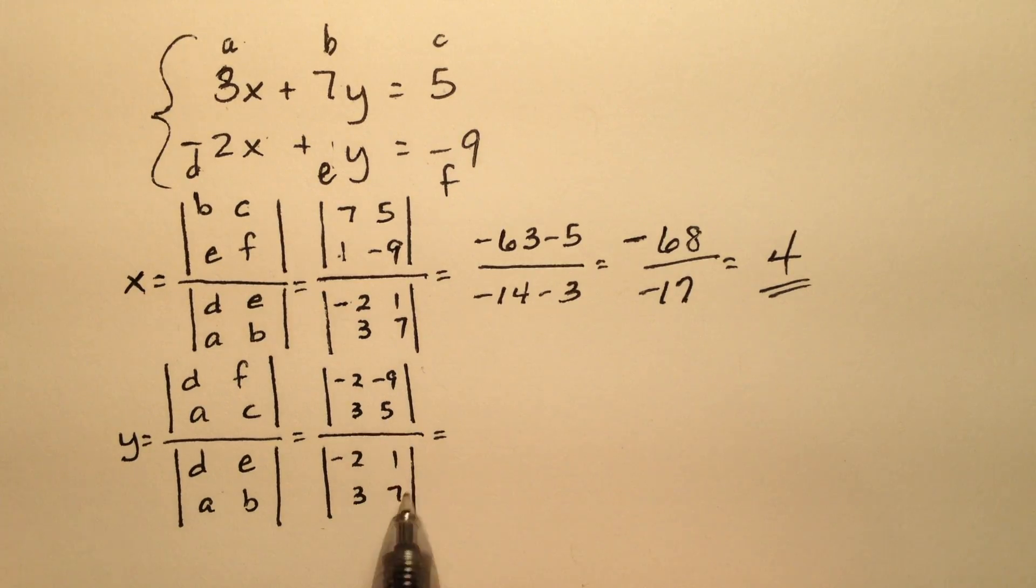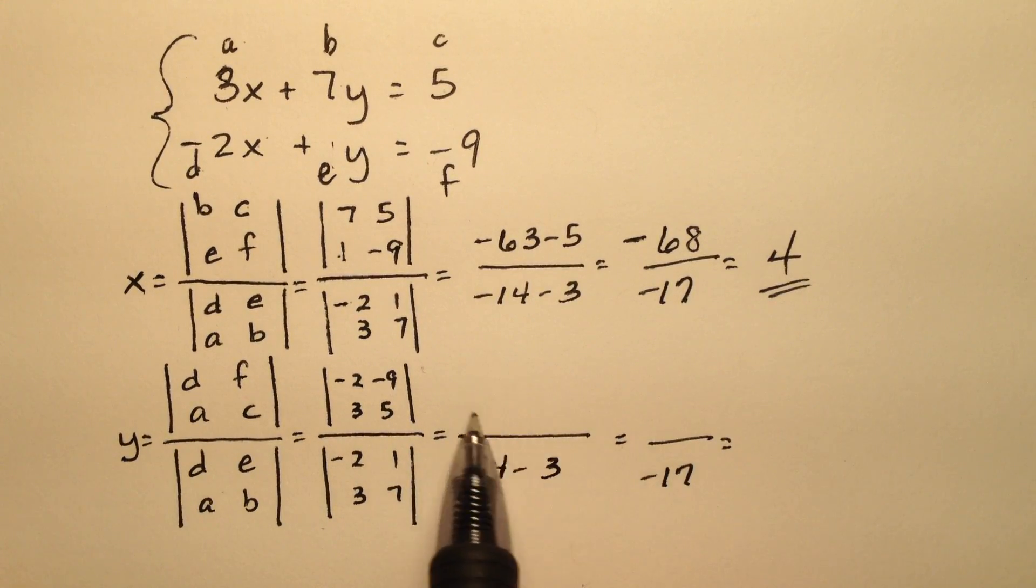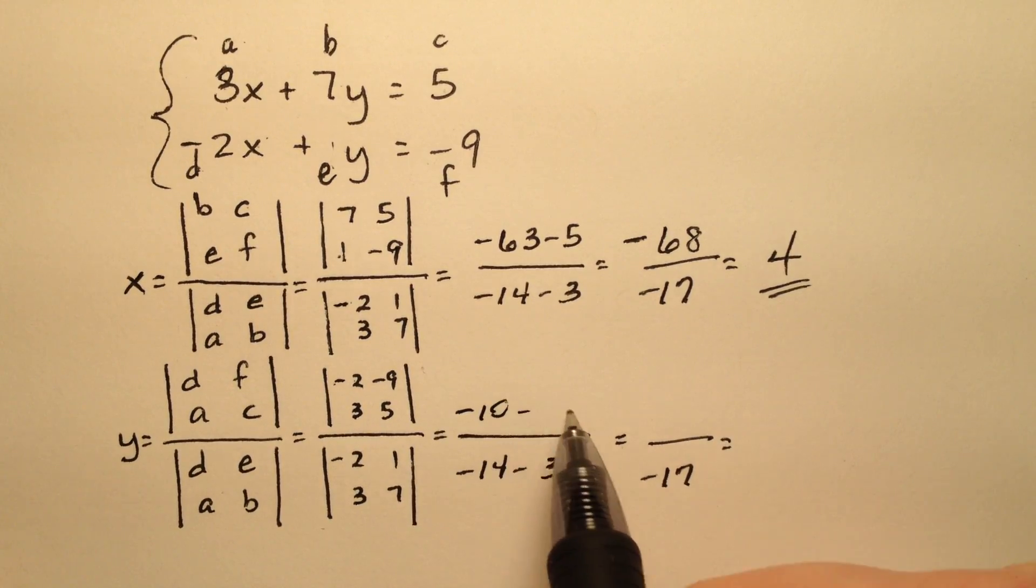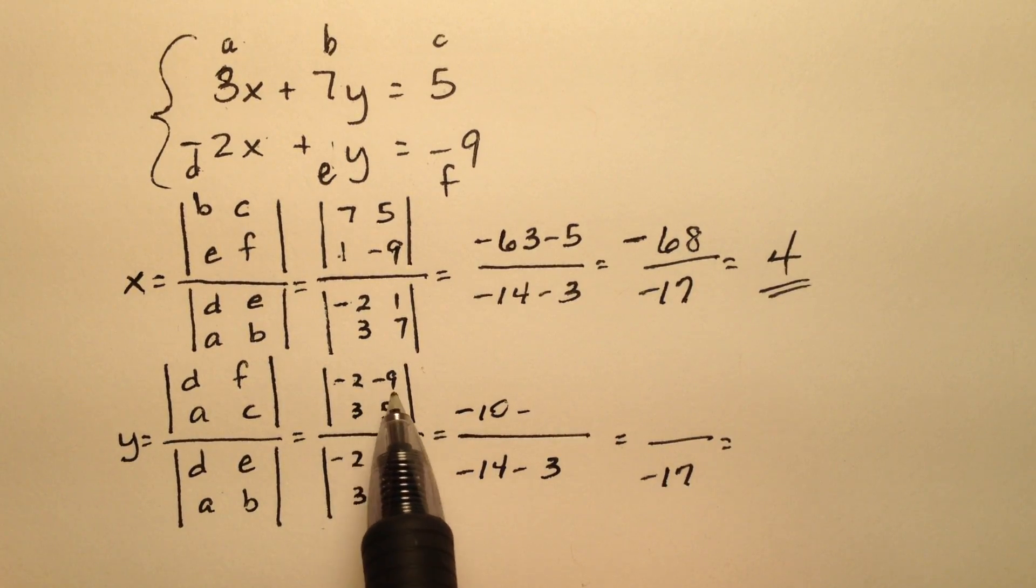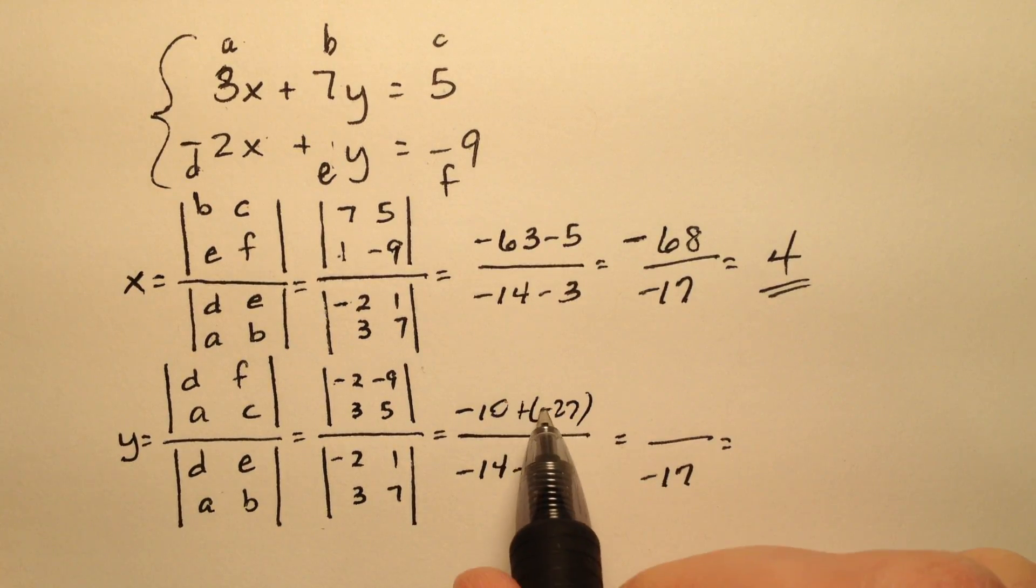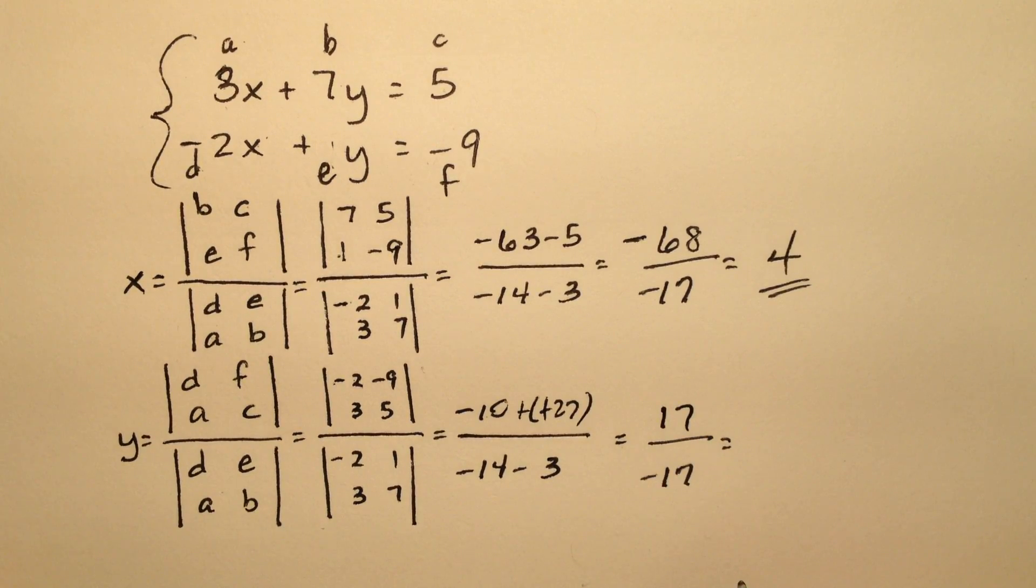Okay, so I know that my denominator for my Ys will be the same thing. So let's just focus on the numerator. So negative 2 times 5 is negative 10 minus 3 times negative 9 is negative 27. So I'm going to add negative 10 plus 27 is 17. And 17 divided by negative 17 is going to be negative 1.